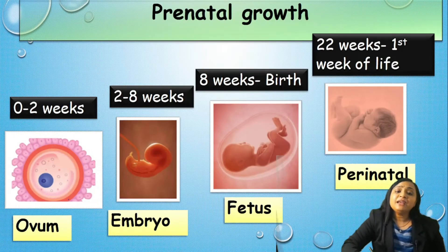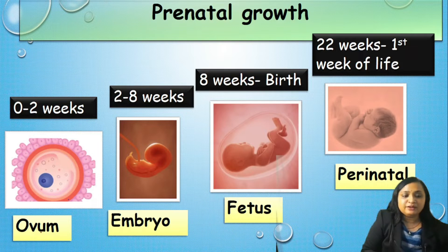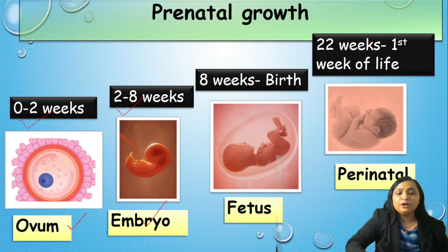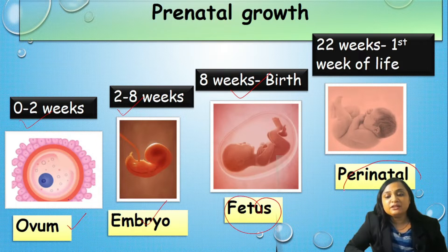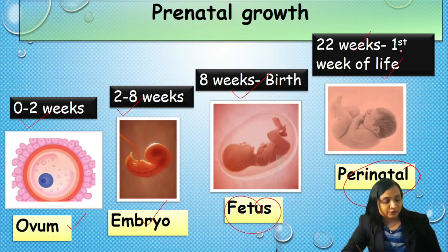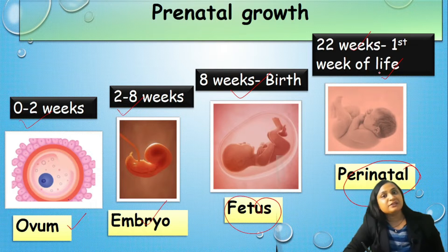Periods of growth will be either prenatal growth period or postnatal growth period. If you see the prenatal growth period, the first 2 weeks is called ovum. Starting from 2 weeks to 8 weeks, it is called embryo. From 8 weeks till the birth, it is called fetus. There is a special terminology — the perinatal period — that starts around 22 weeks of gestation and it stays till the first week of life.